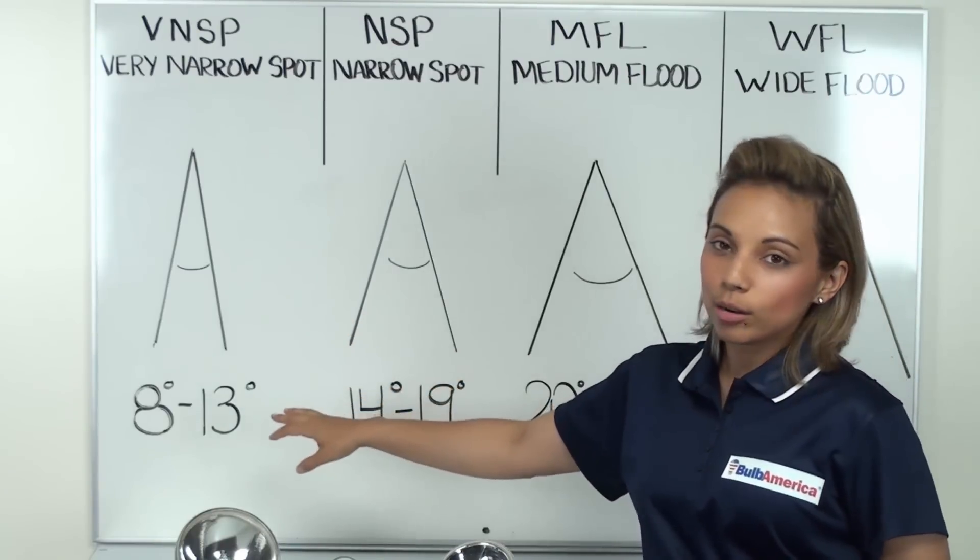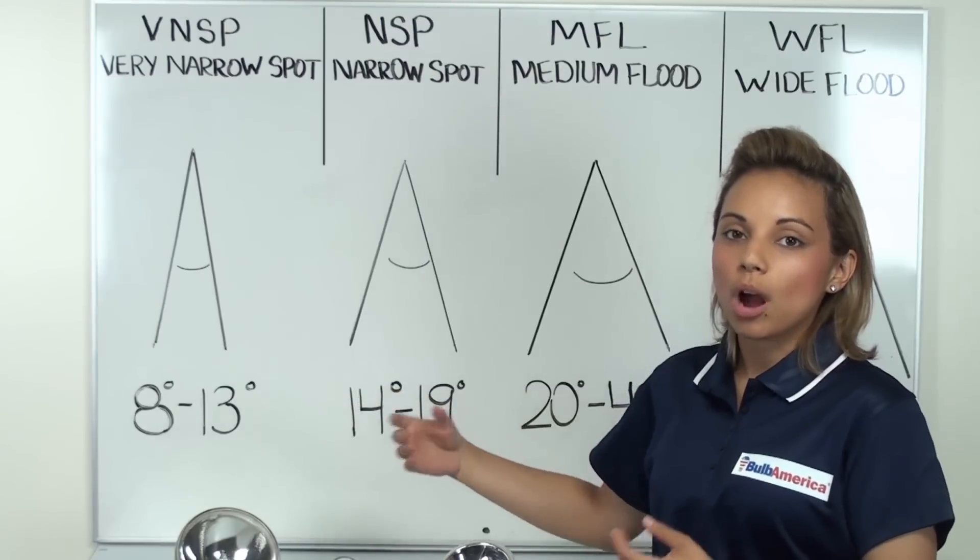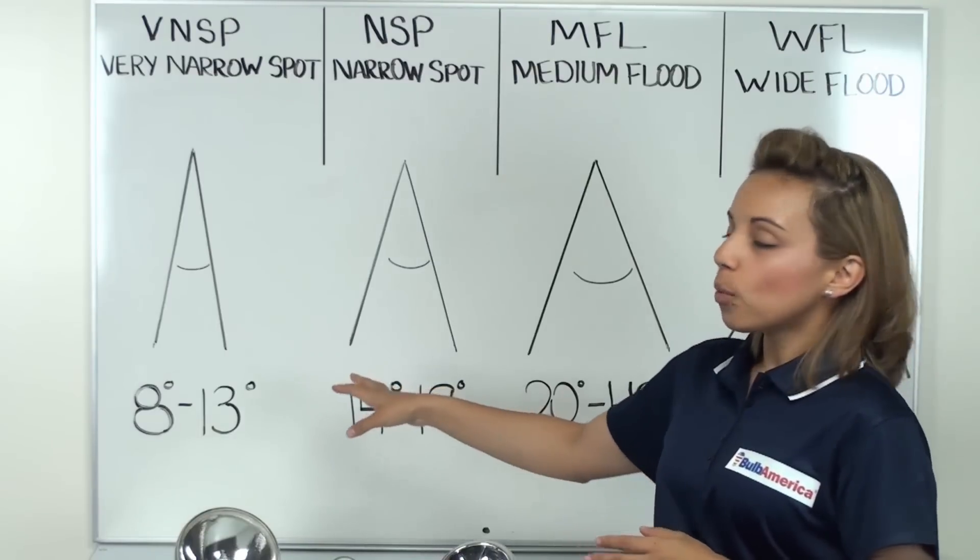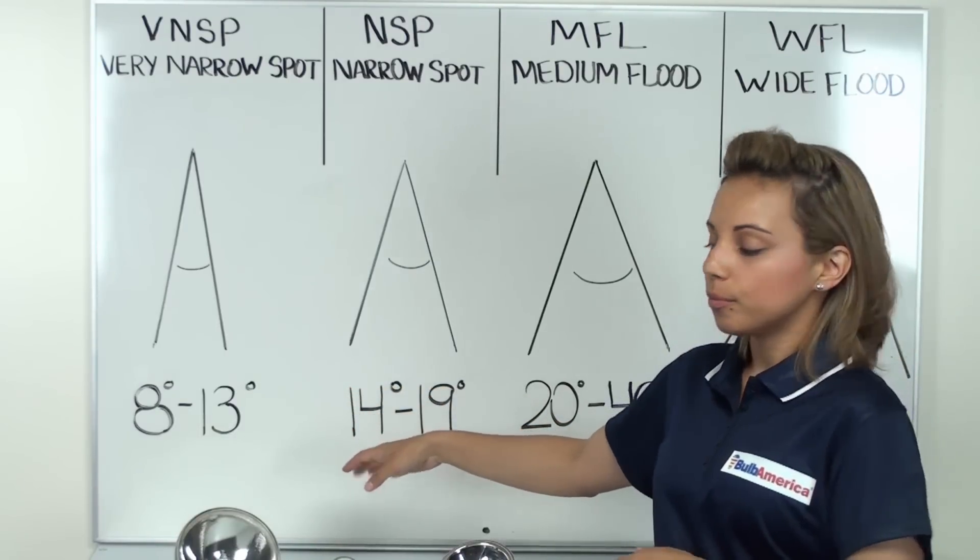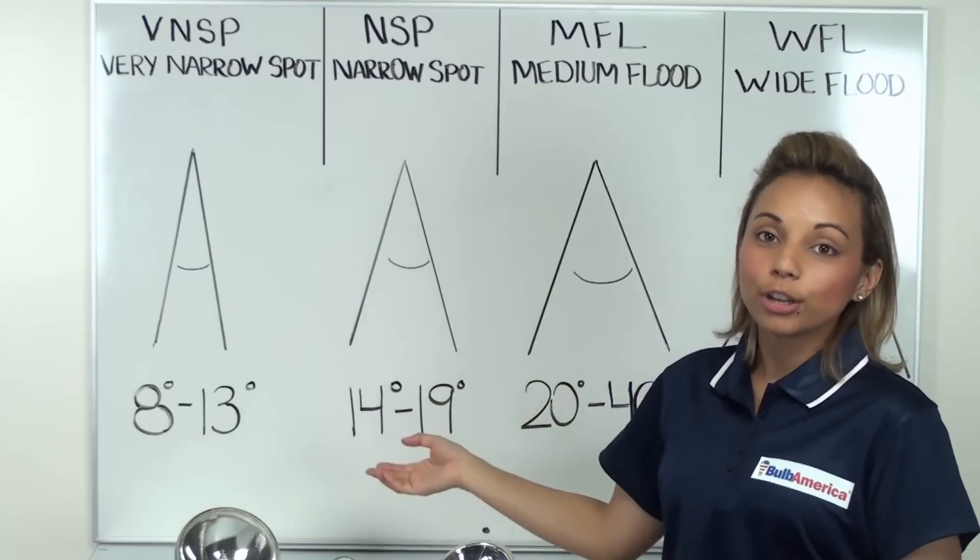So a very narrow spot and a narrow spot are generally used to display products or to display something very particular. If you want to use this for displaying something, a very narrow spot and a narrow spot is a very good choice.